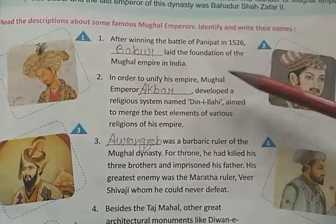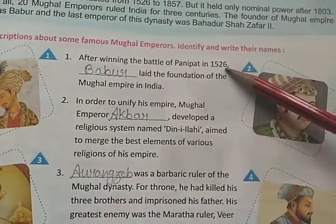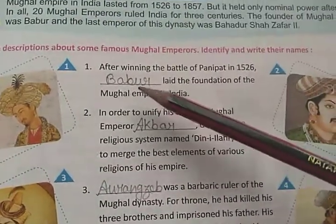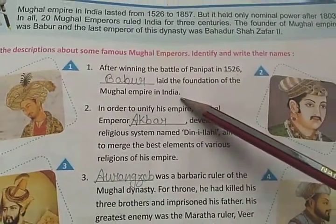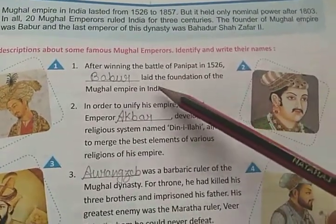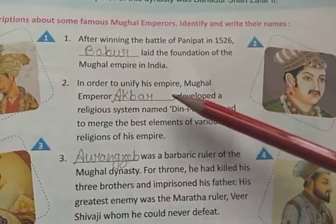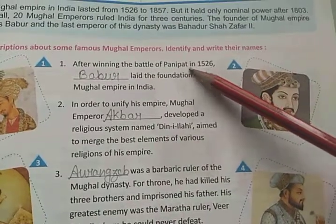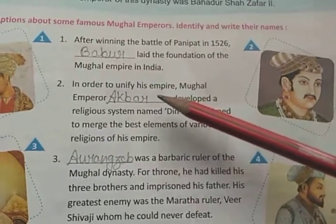Point 1: After winning the Battle of Panipat — Panipat ki yudh 1526 mein hui thi — Babar led the foundation of the Mughal Empire in India. The Mughal Empire was first established in 1526 by Babar. In the Battle of Panipat, he defeated the king of Kanauj, and after defeating the king of Kanauj, he established the Mughal dynasty in India.